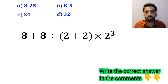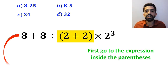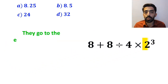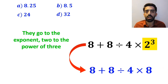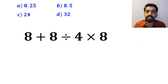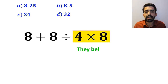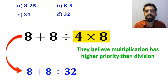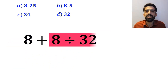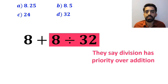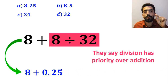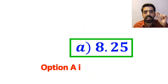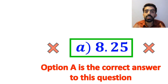Also, some other people, to solve this question, first go to the expression inside the parenthesis and write 8 plus 8 divided by 4 times 2 to the power of 3. In the next step, they go to the exponent and simplify to 8 plus 8 divided by 4 times 8. Then, believing multiplication has higher priority than division, they perform 4 times 8 to get 8 plus 8 divided by 32. They then divide 8 by 32 to get 8 plus 0.25, which equals 8.25, and conclude that option A is the correct answer. However, it is not the correct answer.